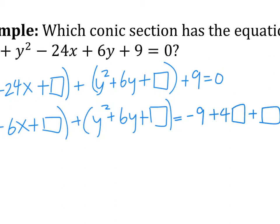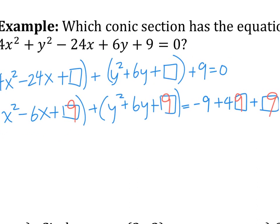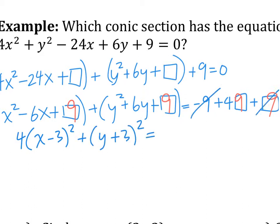What is the magic number for the x part? 9. So add 9 there. And for the y's? 9. Now we want to factor and simplify: 4(x minus 3) squared plus (y plus 3) squared equals — the 9 and 9 cancel — so just 36.